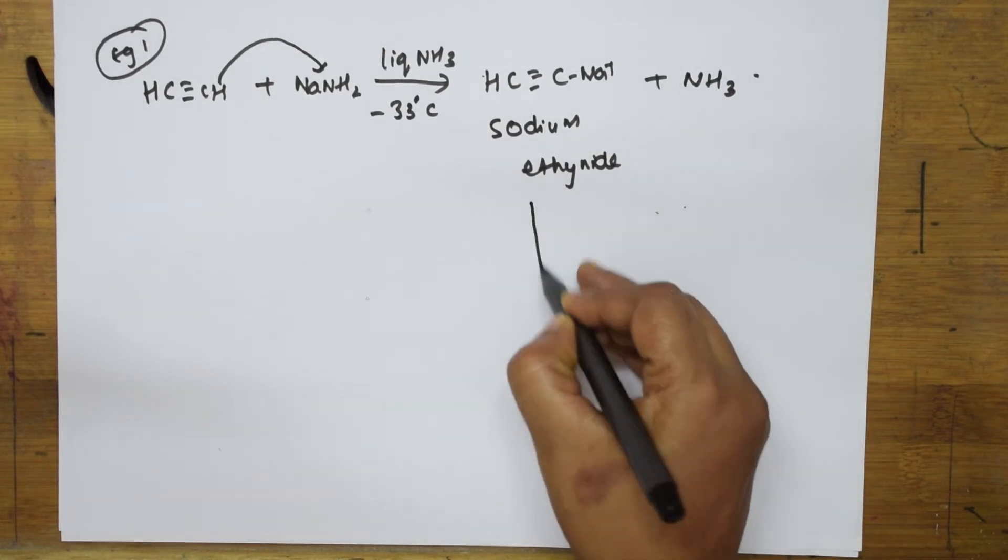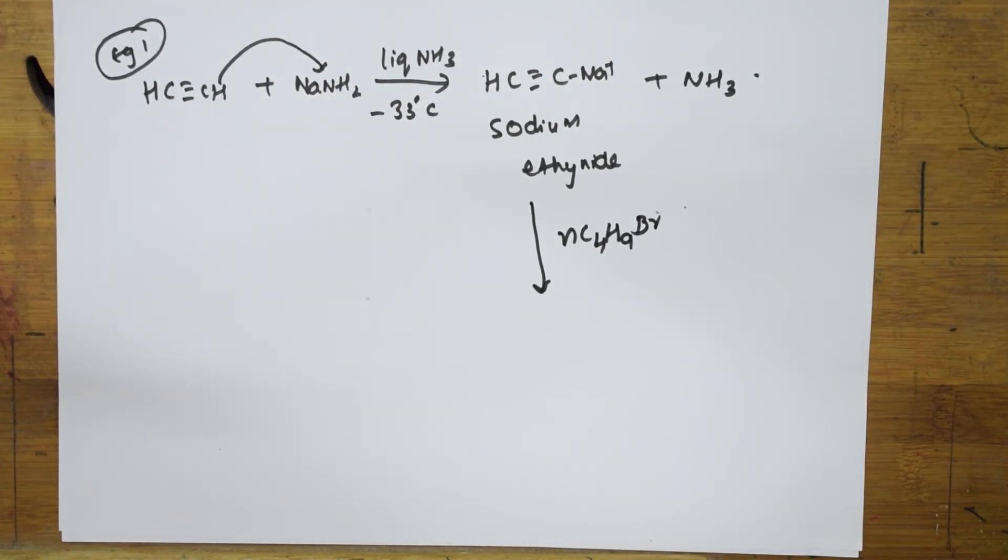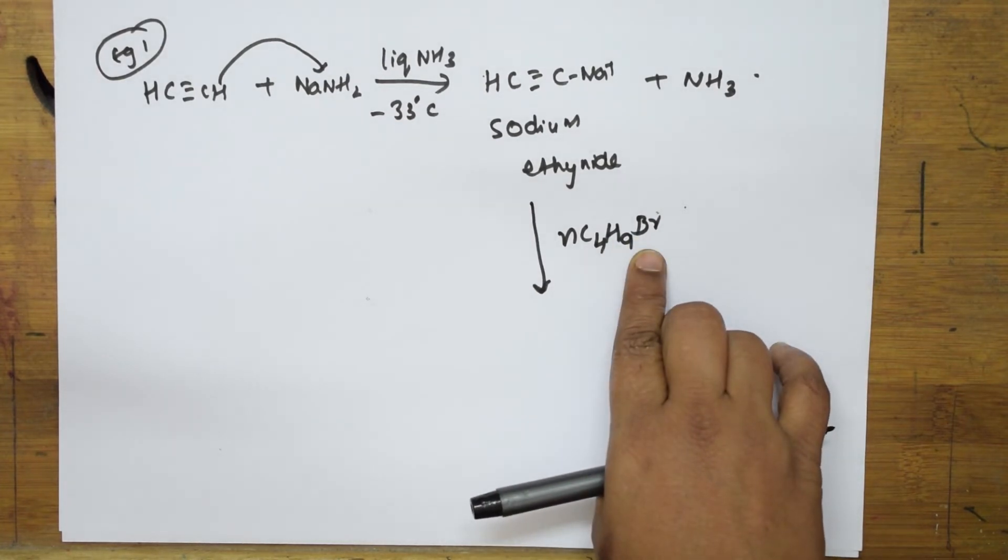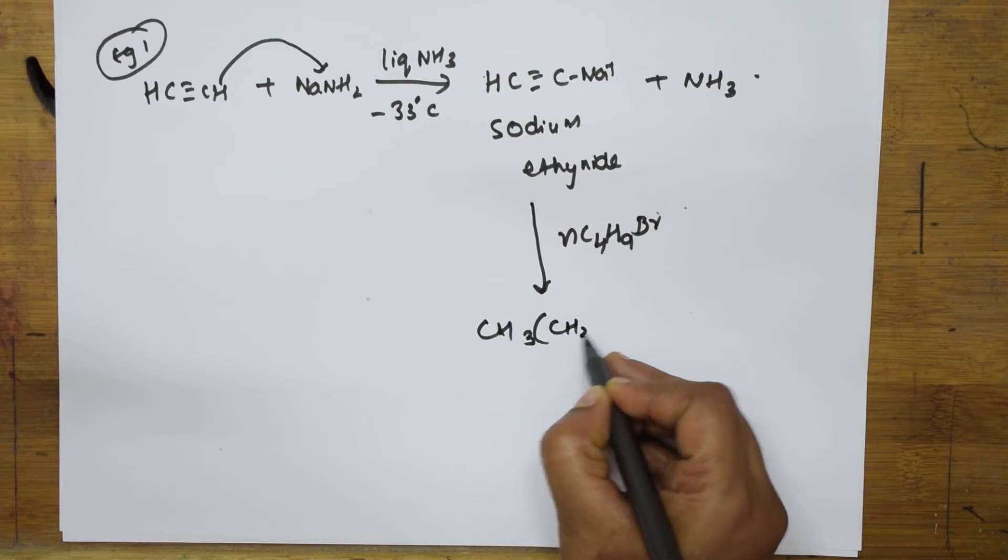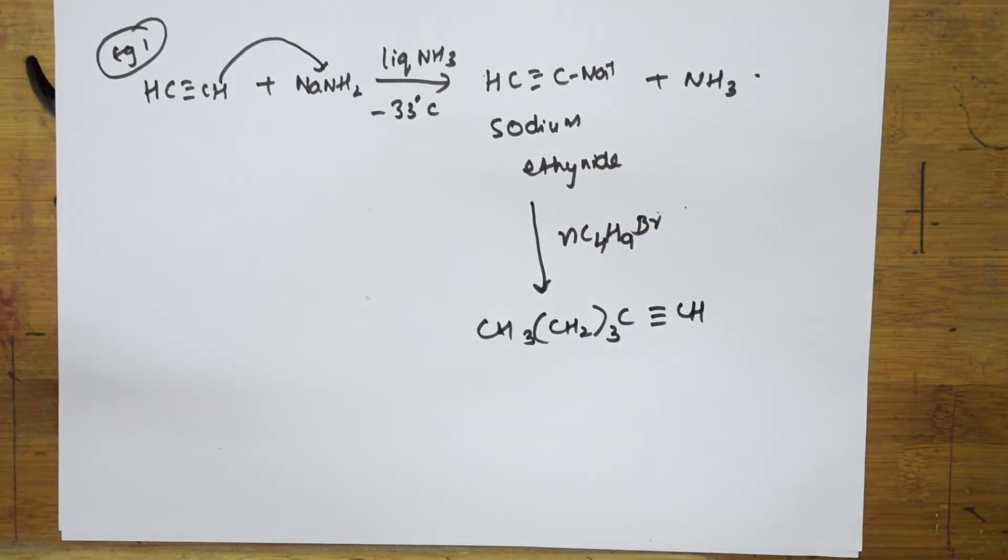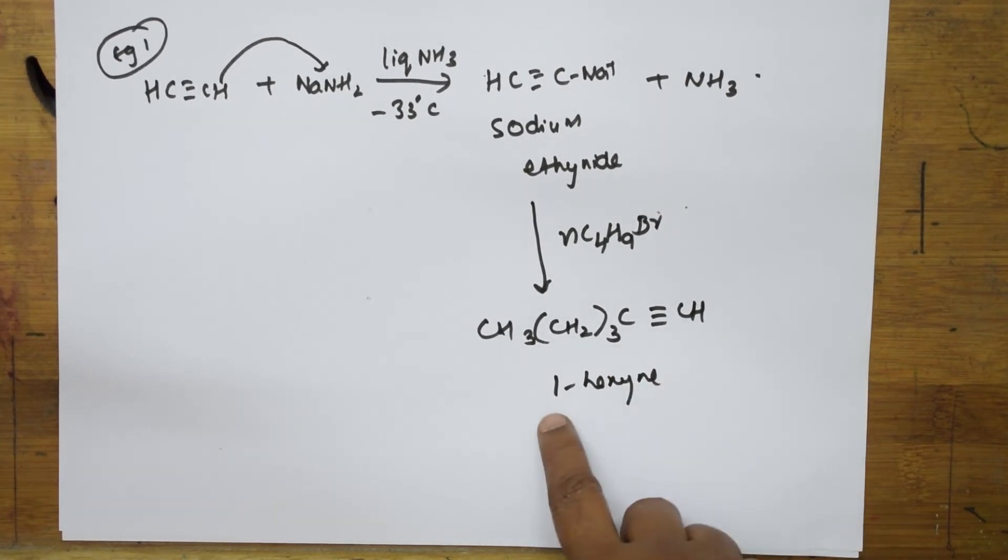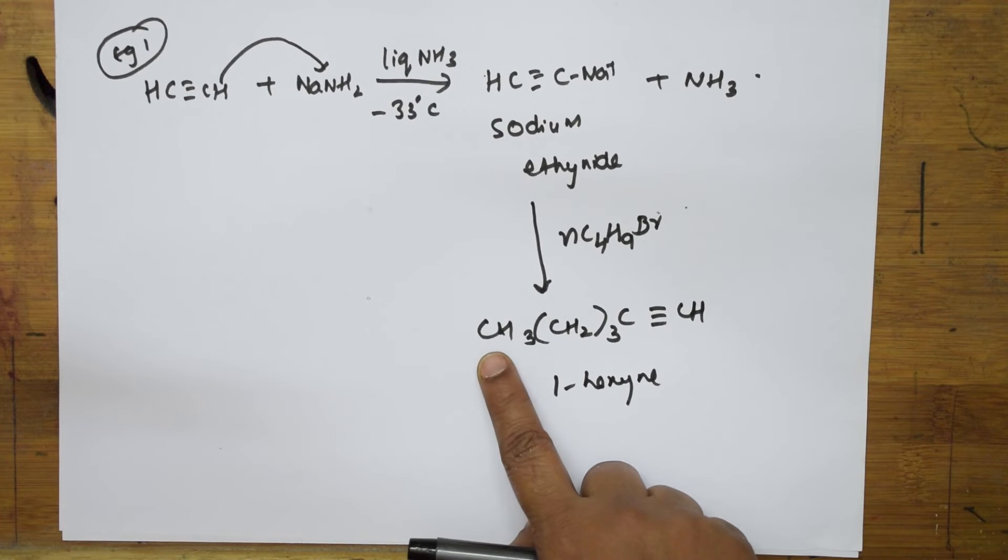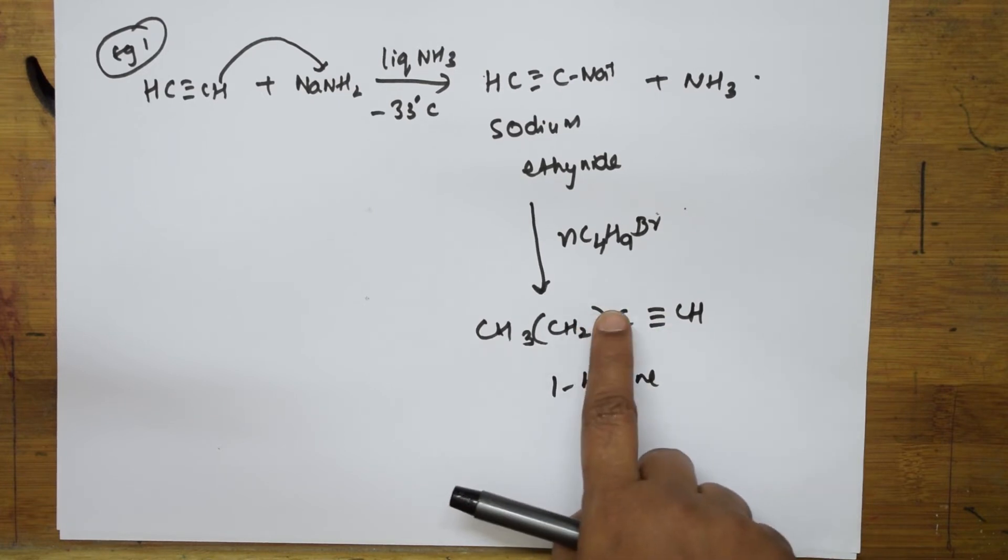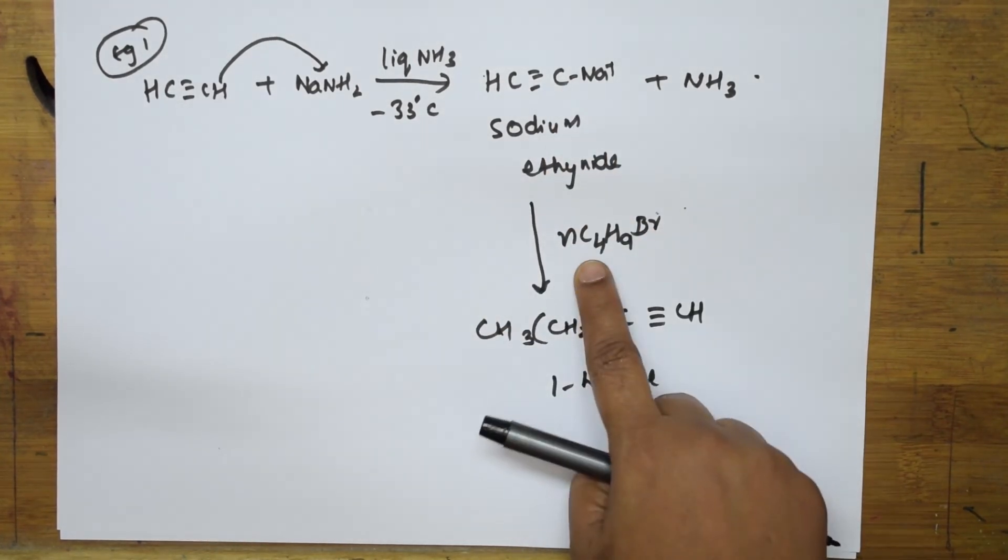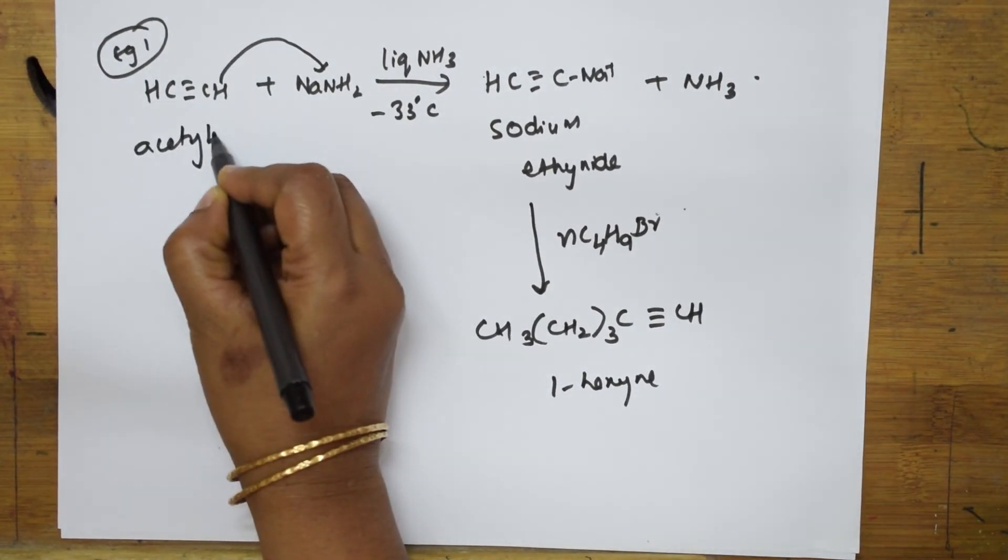To this acetylide I'm going to introduce C4H9Br, which is butyl bromide. Observe carefully - the product formed is CH3-CH2-CH2-CH2-C≡CH. So the answer is 1-hexyne: 1, 2, 3, 4, 5, 6 - six carbons. This is how higher alkynes are prepared from lower alkynes, from acetylide.